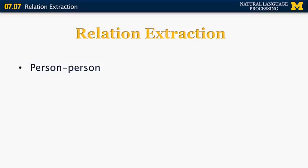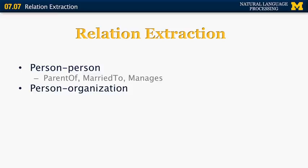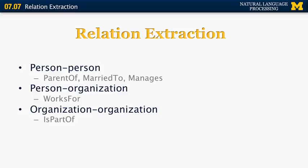What about relation extraction? There are many different relations that exist in text. For example, relation between two people. That can be parent of, or married to, or manager. You can have relations between a person and an organization. For example, a person can work for a certain organization. And you can also have relations between two different organizations. For example, organization A is part of organization B. You can also have organization location relations. For example, such and such organization is headquartered at such and such location.